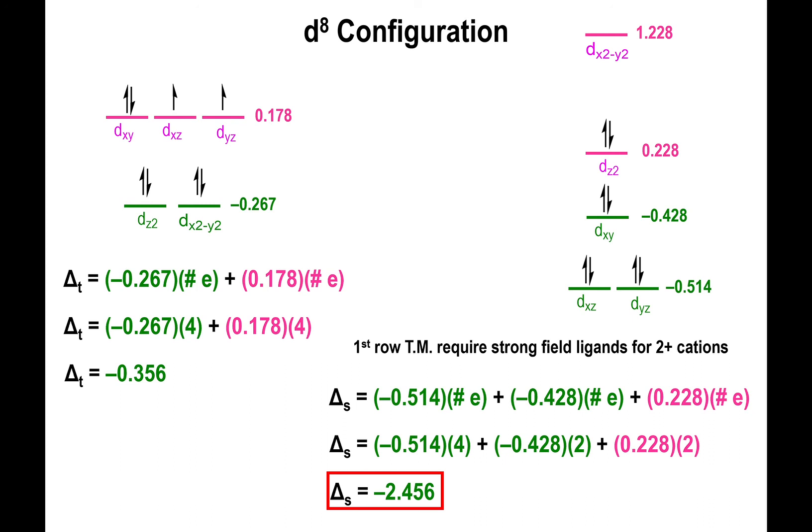For first row transition metals with a 2 plus charge, if you have weak field ligands, you're going to end up with a tetrahedral structure even if the configuration is d8. If you have strong field ligands, then you will ensure the square planar configuration.